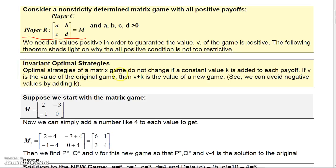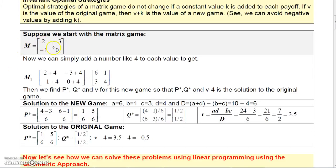Invariant optimal strategies: Optimal strategies of a matrix game do not change if a constant value k is added to each payoff. In other words, we can add a value to each of these numbers, and we can get a new game, and that way we can avoid negative values. So the solution to this new game will also be the same solution to the original game.